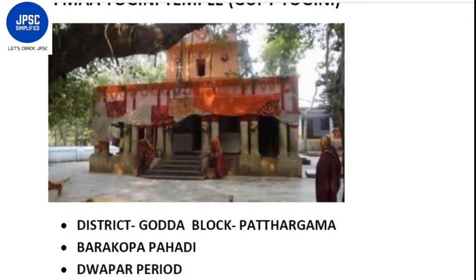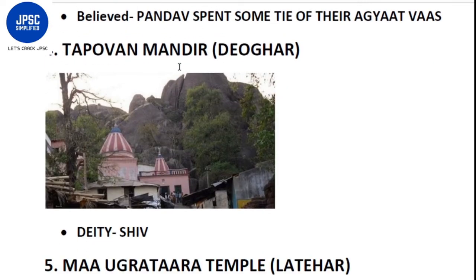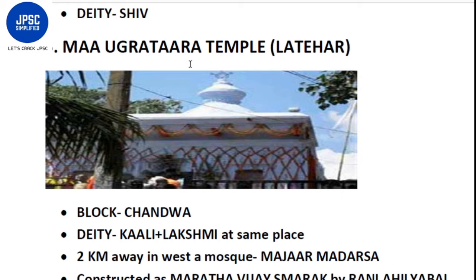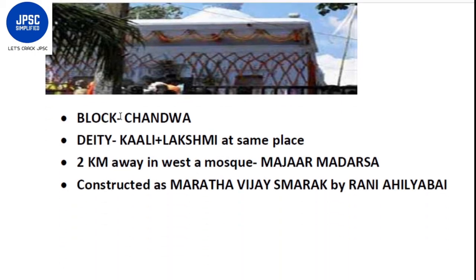The fourth temple is the Tapovan Mandir, located in Deoghar. The unique feature of this temple is that the idols of both Kali and Lakshmi are worshipped at the same place. One more important piece of information is that two kilometers away to the west, a mosque is located - the Majar Madarsa - constructed as Maratha Vijay Smarak by Rani Ahilyabai.